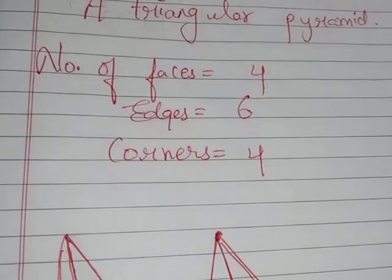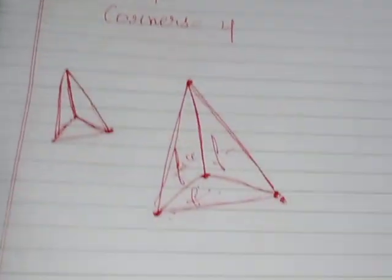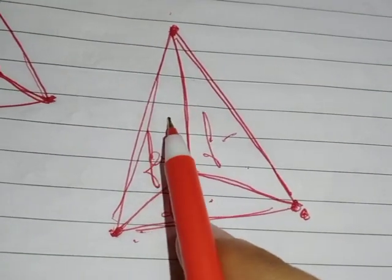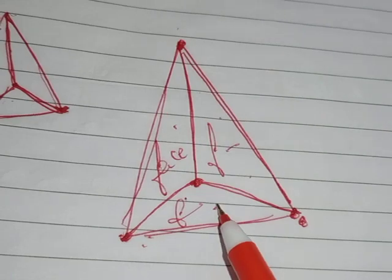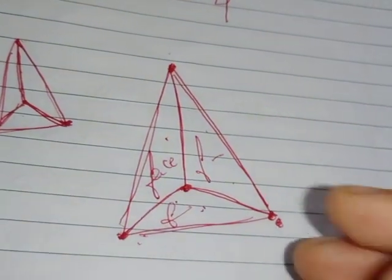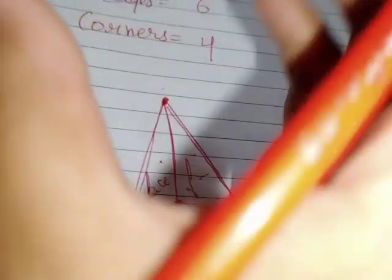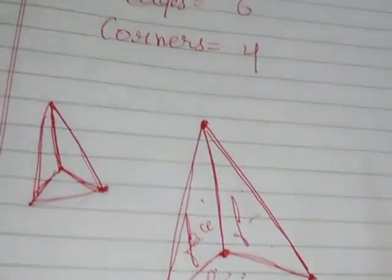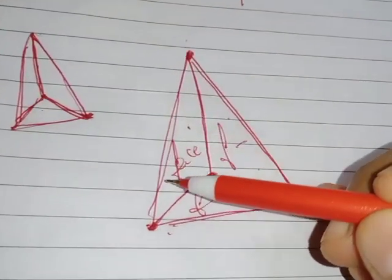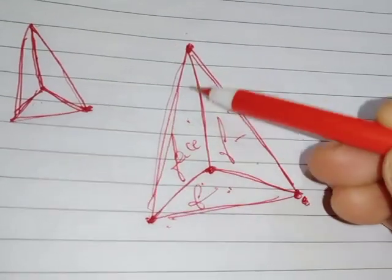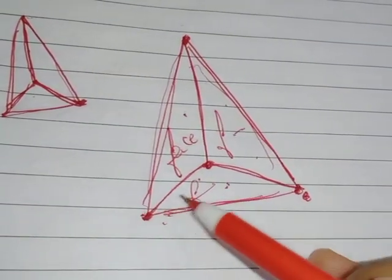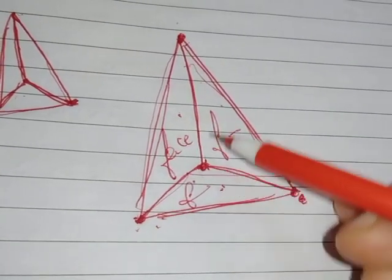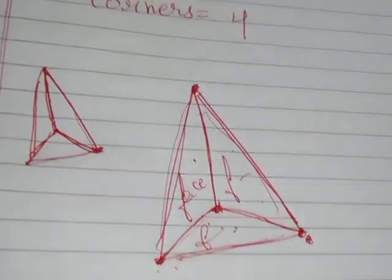I hope it is clear. In a triangular pyramid we have four faces, six edges, and four corners. For faces: one, two, three, and one at the back side — when I turn this around we get the back face. For edges: one, two, three, four, five, and six. And the joining points are the corners of a triangular pyramid.